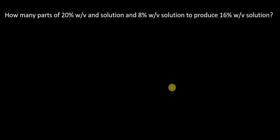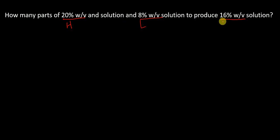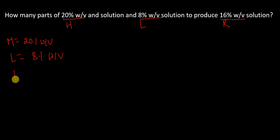Let's talk about the first example. This question says: how many parts of a 20% weight by volume solution and 8% weight by volume solution is required to produce a 16% weight by volume solution? So 20% is the higher concentration, 8% is the lower concentration, and the solution we are producing is 16% weight by volume — this is the required concentration. So higher is 20% w/v, lower is 8% w/v, and required is 16% w/v.